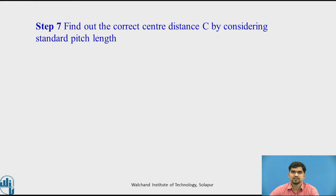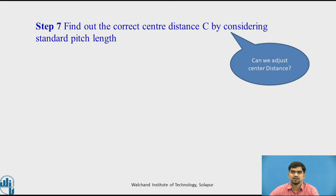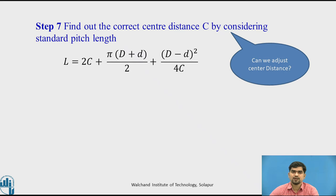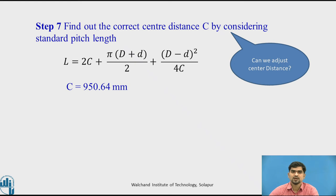Now we have to find out the corrected center distance C by considering the standard pitch length. Can we adjust the center distance? Yes, we can adjust it to an approximate smaller value. Putting the standard pitch length value of 3200 mm into the equation, we calculate c equal to 950.64 mm. Previously the problem gave approximately 1 meter; by considering the standard pitch length we are getting the center distance as 950.64 mm.